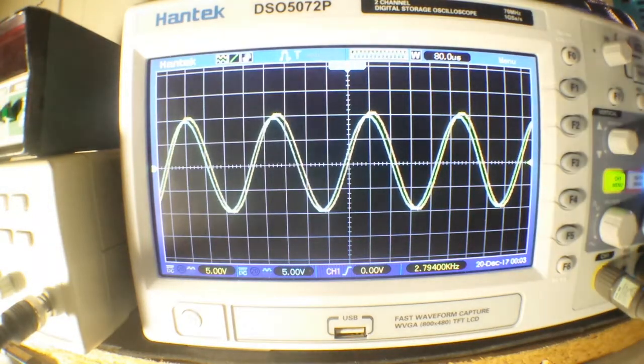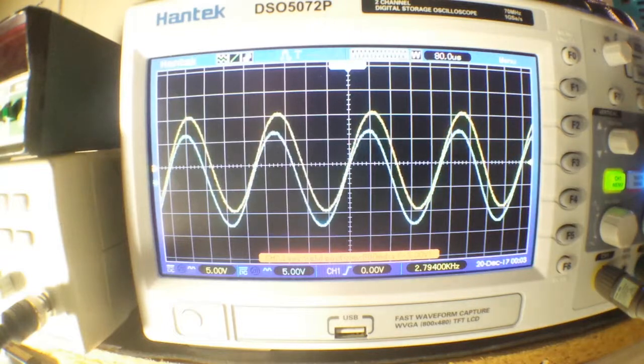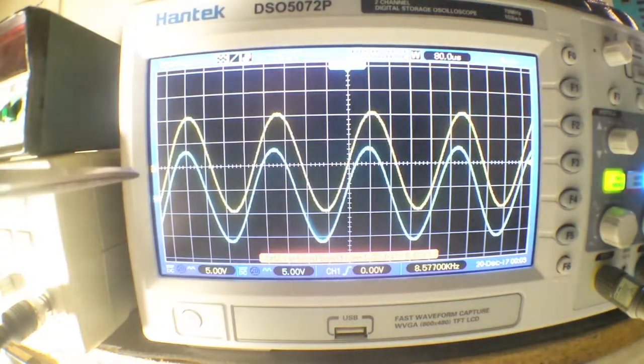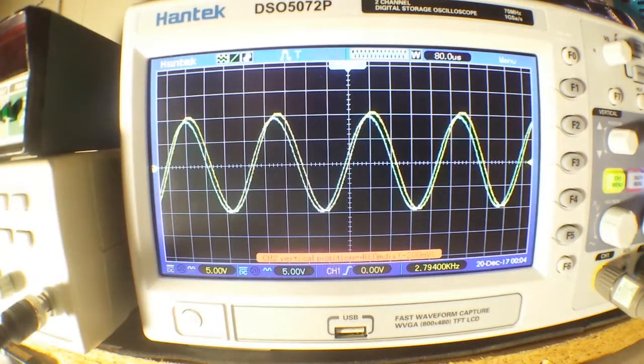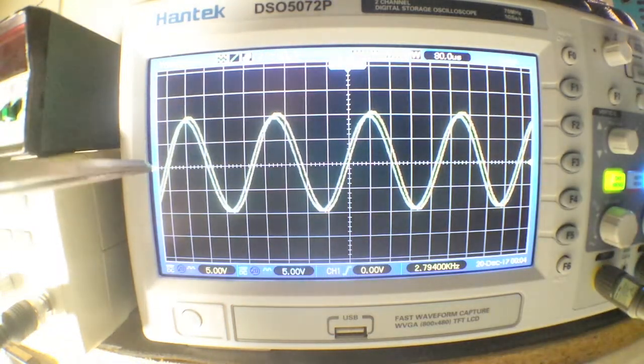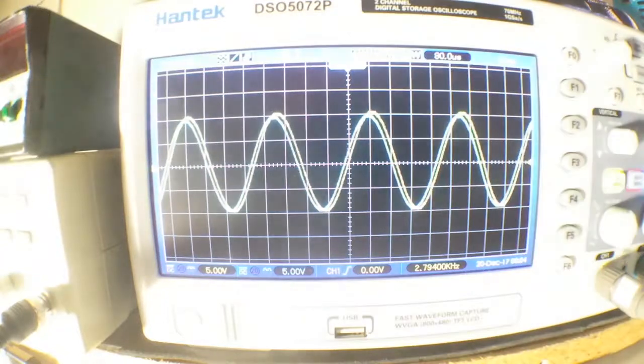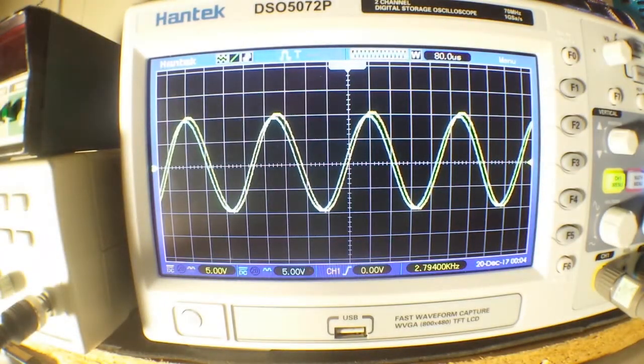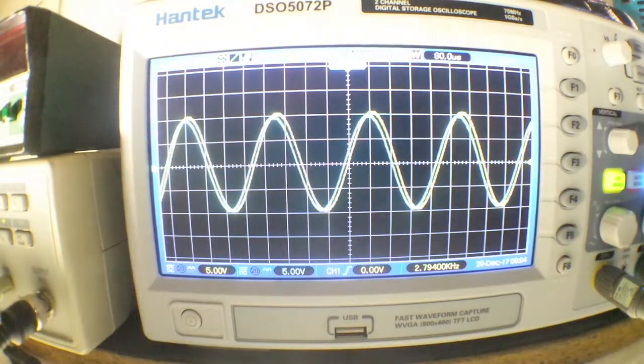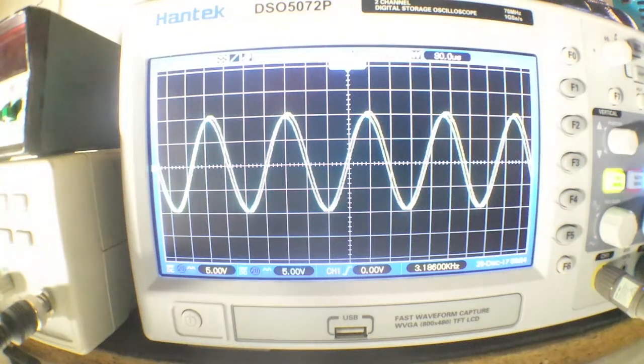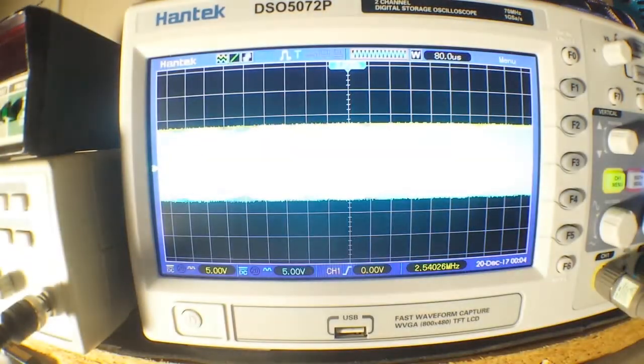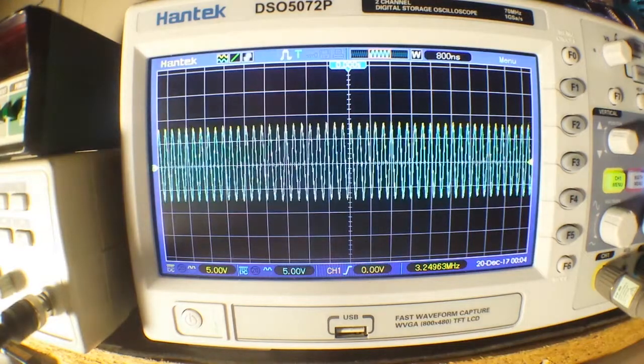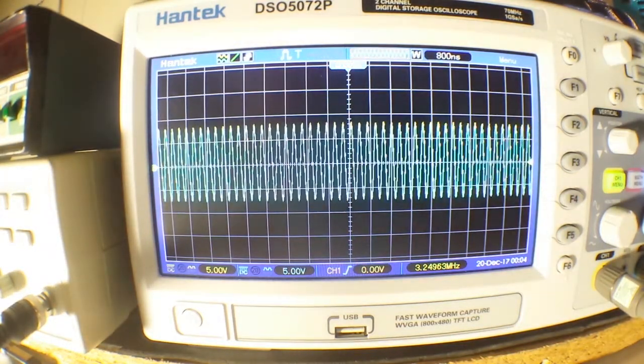Now if we look at our waveforms, the yellow channel 1 is our input waveform, the blue channel 2 is our filtered waveform. You can see that they are of mostly equal amplitude although there is a slight phase shift and that's at the frequency of 2.79 kilohertz. If I take it up higher everything is fine. I'm going to go up to over 3 megahertz and you can see again everything is copacetic.